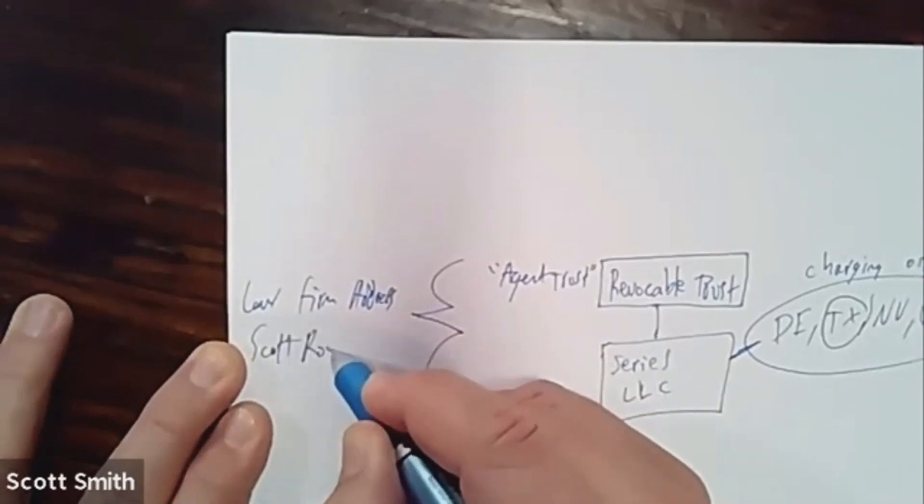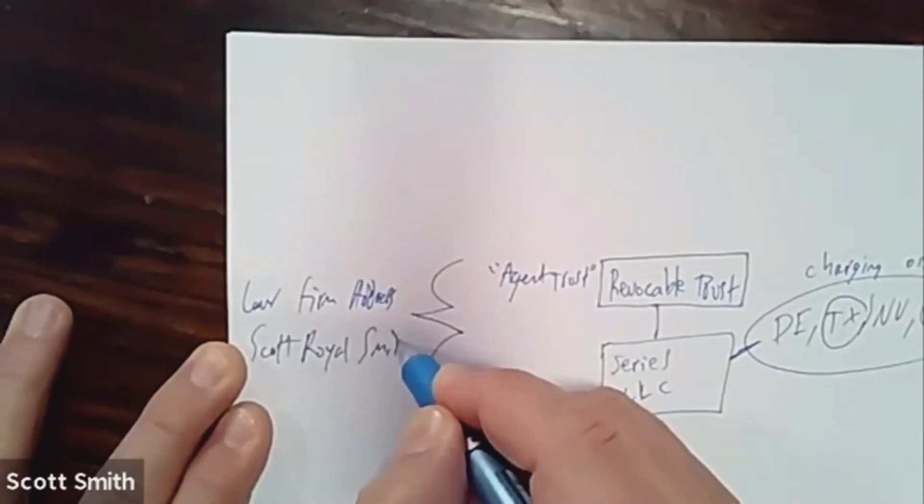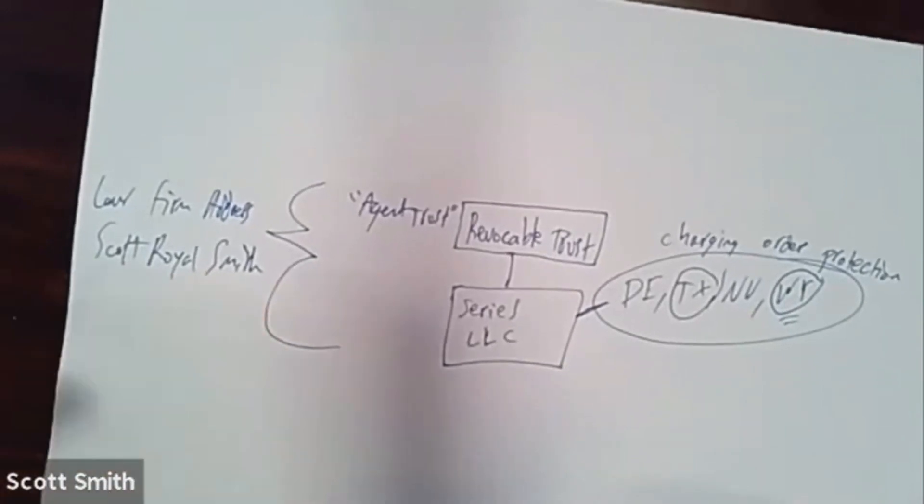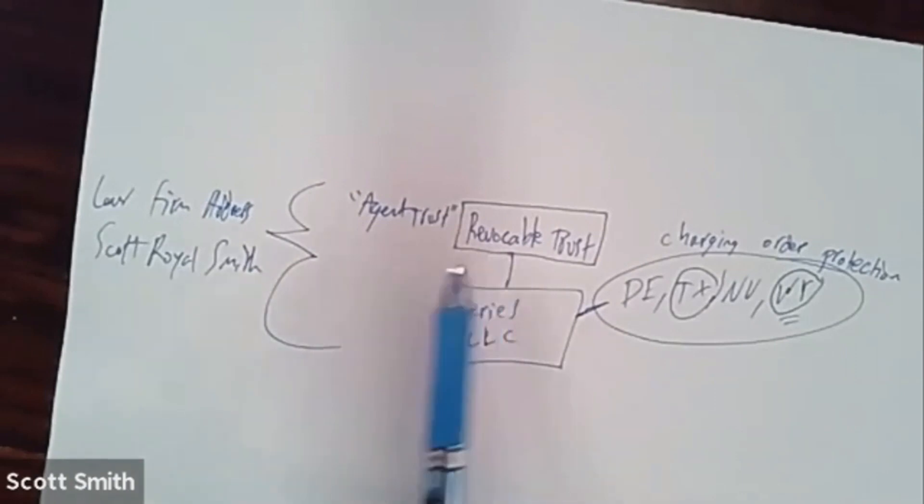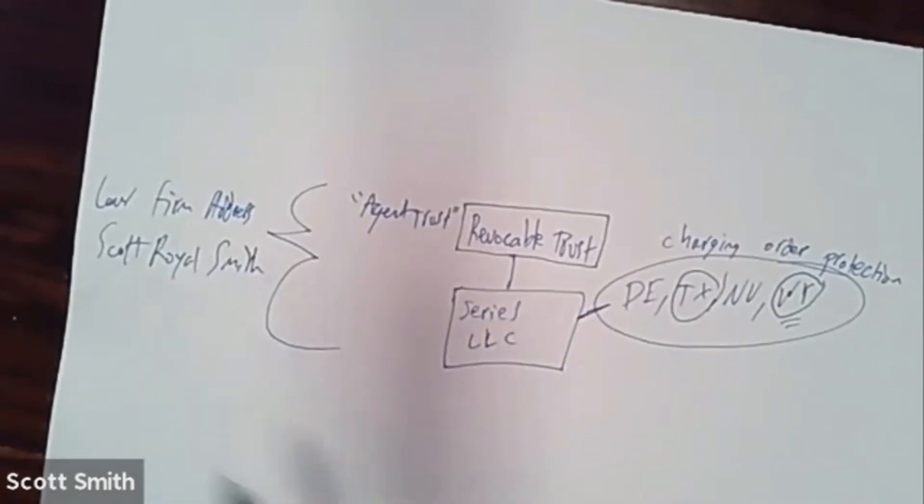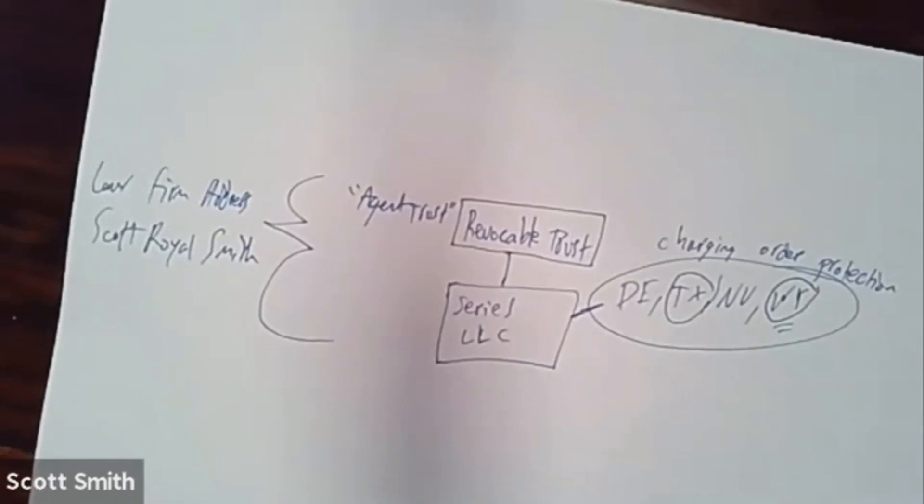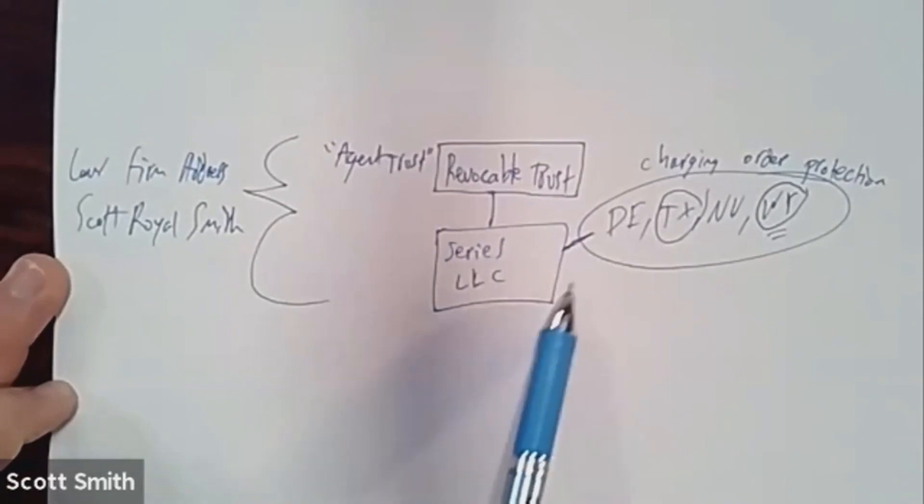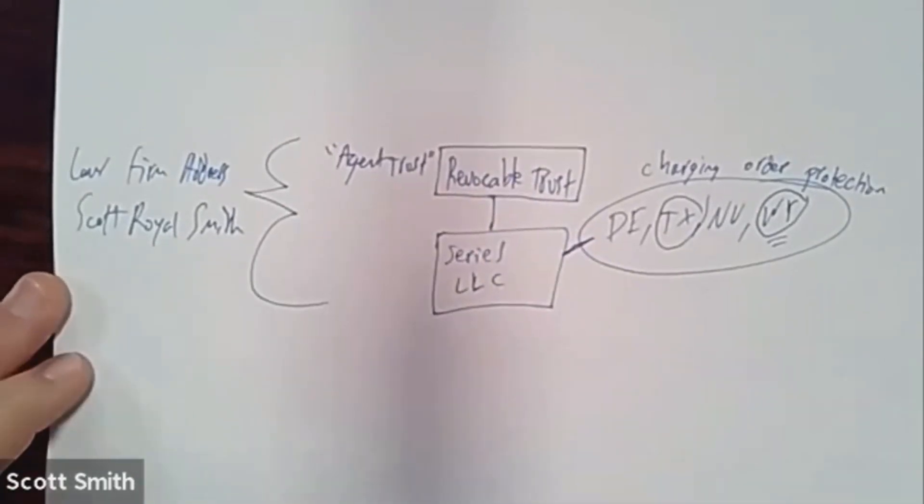You might ask, why? Why would you want to use the attorney and the law firm address for these particular points? And the reason why is because now that this points to a law firm and points to an attorney, all the information is further protected by the attorney-client privilege. So it gives you that extra level of protection that you can only get when you form this through a law firm.